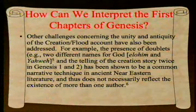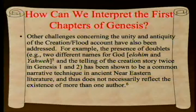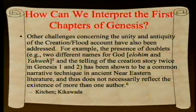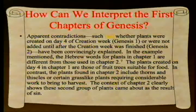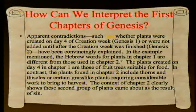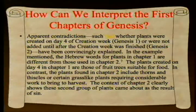Other challenges concerning the unity and antiquity of the creation and flood account have also been addressed. The presence of doublets—for example, two different names for God, and the creation story told twice in Genesis 1 and 2—have been shown to be a common narrative technique in ancient Near Eastern literature and thus does not necessarily reflect more than one author, with references to Kitchen and Kikawada. Apparent contradictions, such as whether plants were created in day four or not until after creation week, have also been examined—the Hebrew words for plants in chapter 1 are different from those in chapter 2.